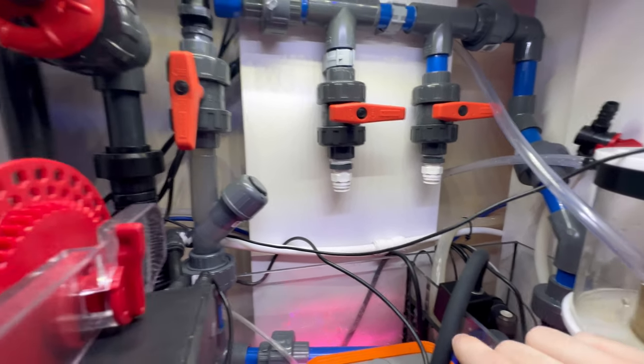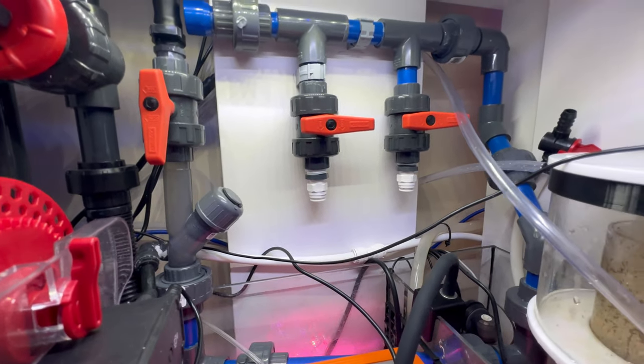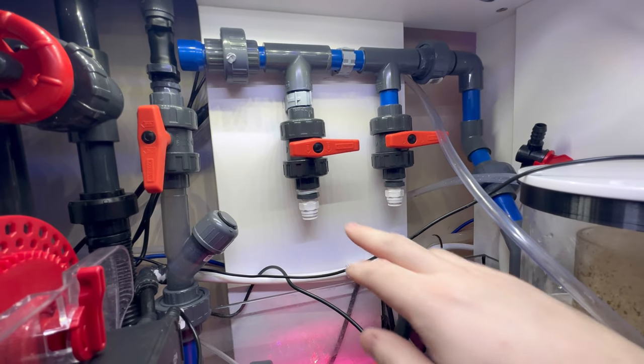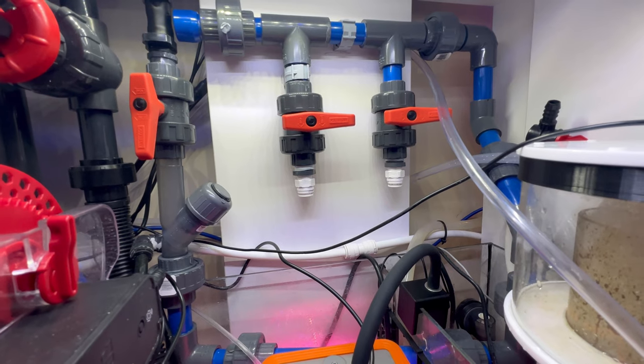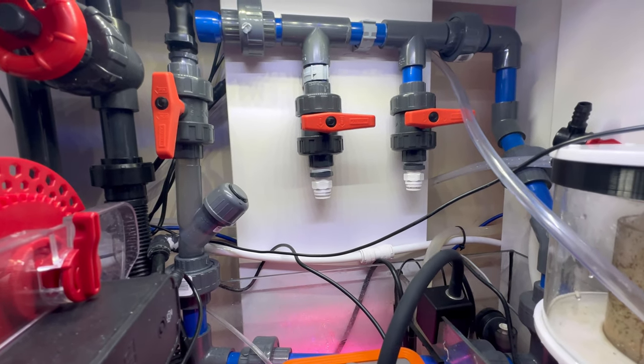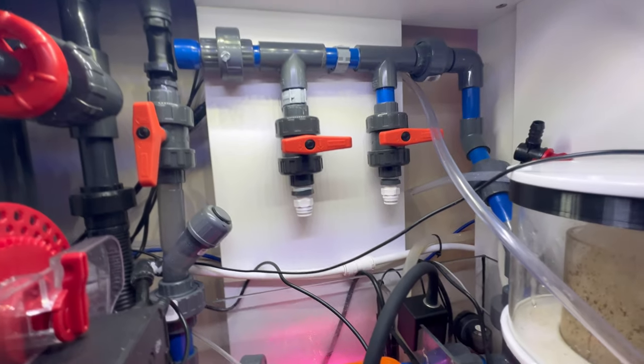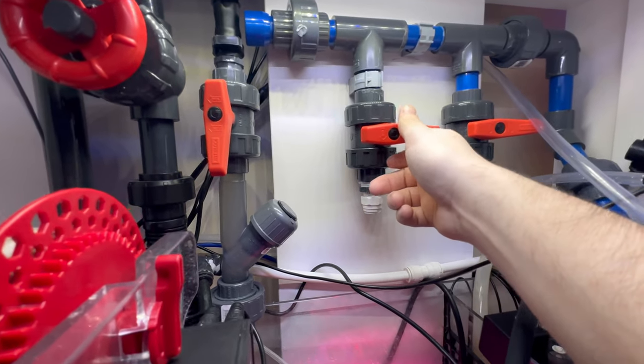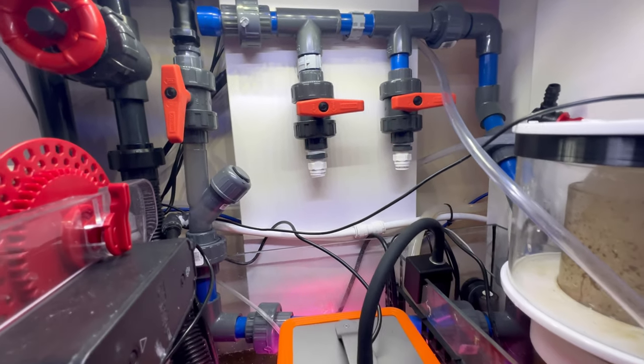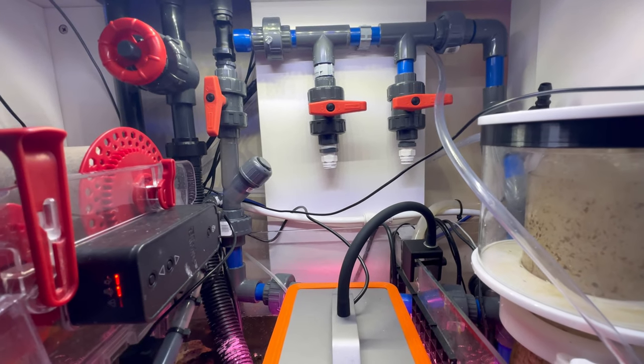On the other side here, if it's not going back into the tank it comes over to these manifolds. With the manifolds you can hook up different reactors. If I had a reactor I wanted to run 24/7 with my return pump I could hook it up right here at the quarter inch push connect and I would just turn this valve and the water would flow out through there.